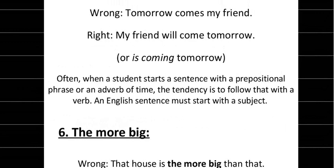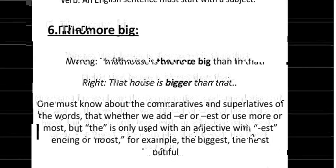The next rule involves comparative degree. 'More big' is wrong — we cannot use these two words simultaneously. The correct form is 'that house is bigger than that.' One must know the comparative and superlative forms of adjectives — whether to add '-er'/'-est' or use 'more'/'most.' The definite article 'the' is only used with superlatives ending in '-est' or with 'most,' for example 'the biggest' or 'the most beautiful.'